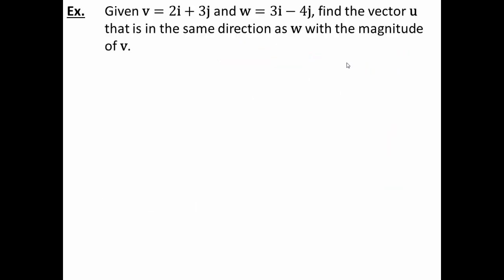Alright, so let's look at this. Given vector v is 2i plus 3j and vector w is 3i minus 4j, find the vector u that is in the same direction as w with the magnitude of v. Hopefully, this question looks familiar. Why don't you go ahead and give it a try and hit play when you are ready.